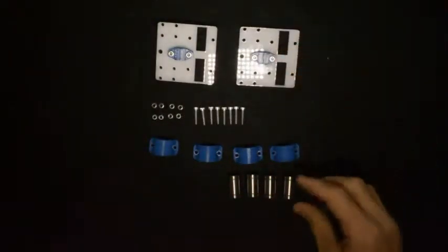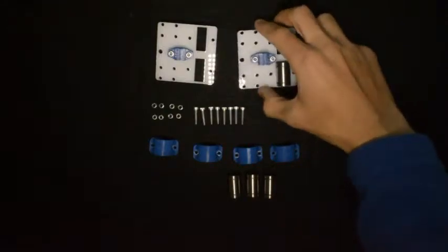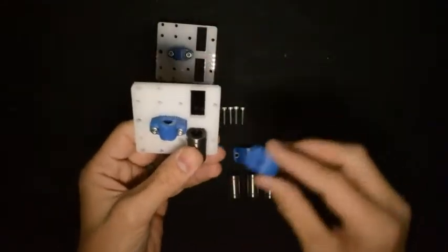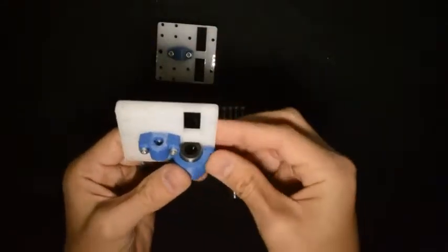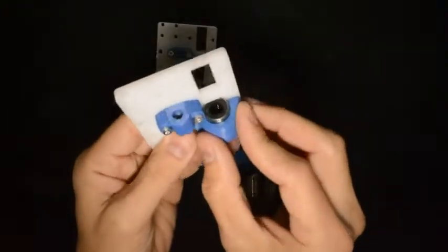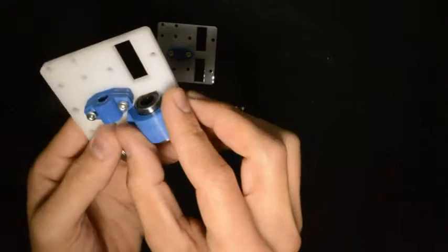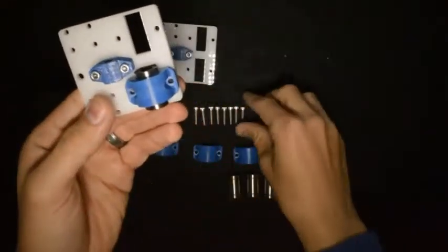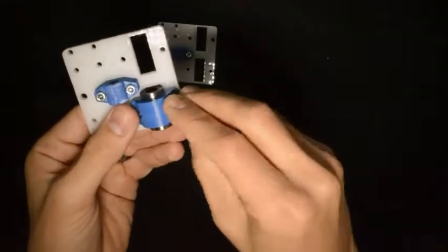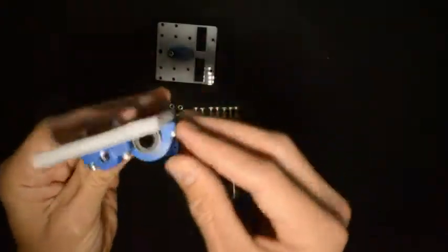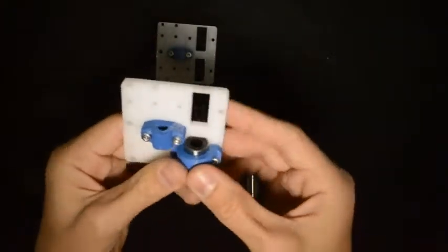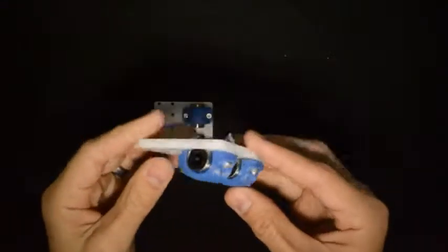The next step is to mount the linear bearings to the space provided. Put the linear bearing in the linear bearing holder into the position provided and screw it down with the M3 by 16 screws. When you are done, the assembly should look like this.